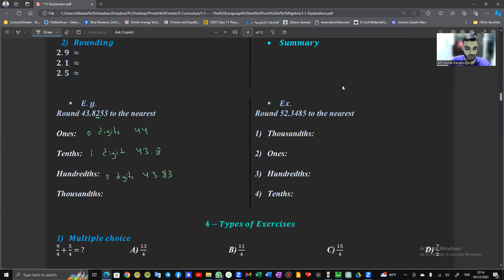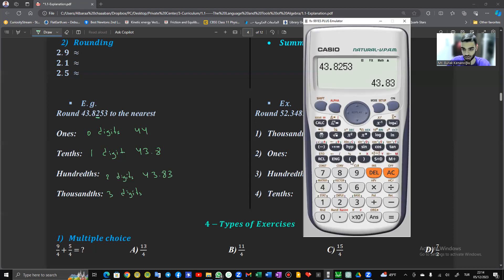And finally thousands. We have three digits, right? So we go to the Casio calculator and we click on shift mode six. Three digits. So it's forty-three point eight hundred twenty-five.